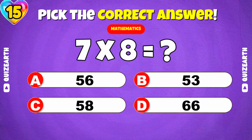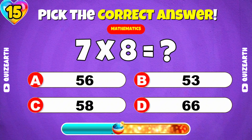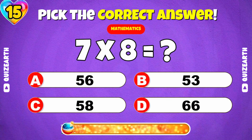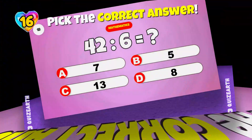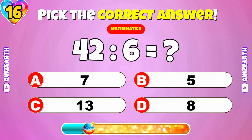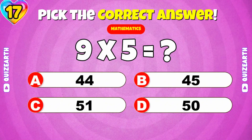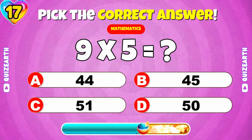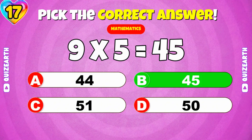What is 7 times 8? 56. What is 42 divided by 6? 7. What is 9 times 5? 45.